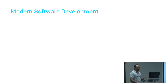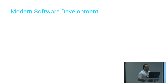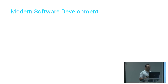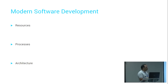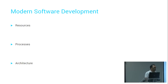Let's talk a little about software development in the modern age — this is all my opinion. To be successful at software development today, you kind of have to get three things right: your resources, your processes, and your architecture.